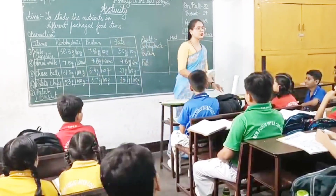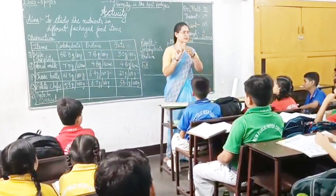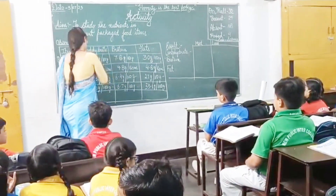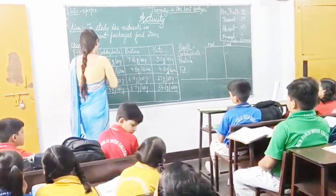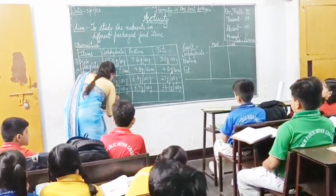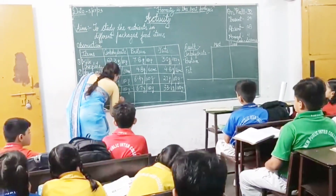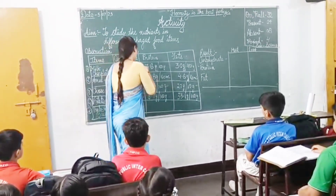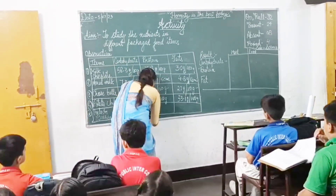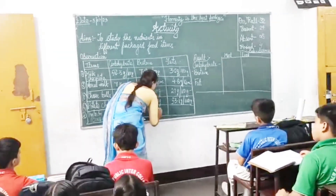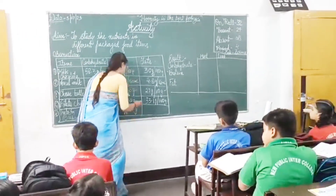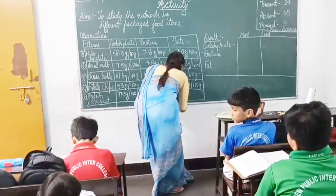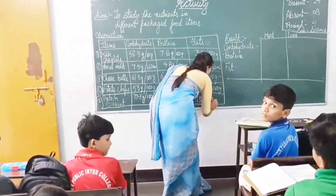Then we come to Parle-G biscuit. We have carbohydrate 77.3 grams per 100 grams. Then we have protein 6.9 grams per 100 grams. And then we have total fat 13 grams per 100 grams.